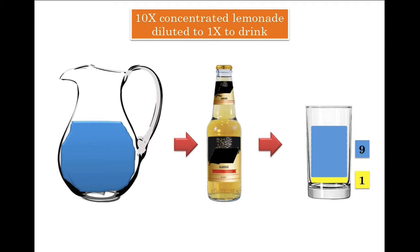So when you say 10X lemonade, you are not specifying how many lemons and sugar cubes that you have added. All you are saying is if you dilute 10X lemonade 10 times by adding 9 parts water, you will get drinkable lemonade.